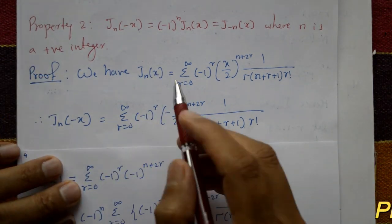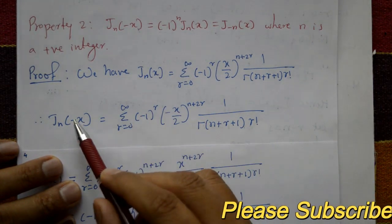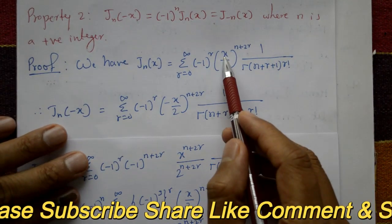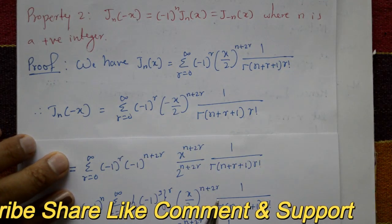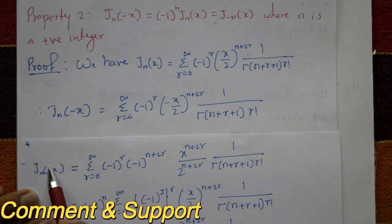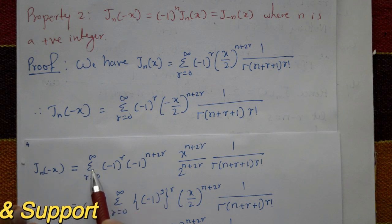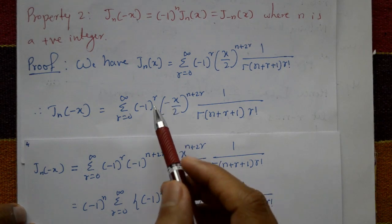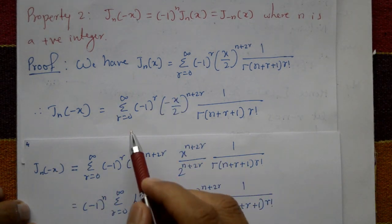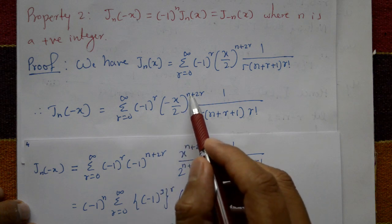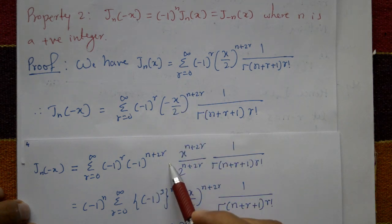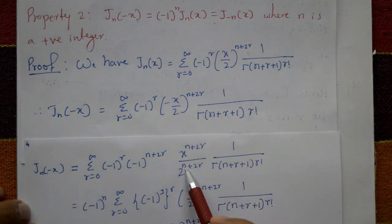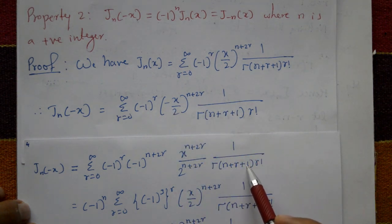Substituting x with minus x, so this becomes minus x and this is also minus x — rest are saved, no change. Now j_n of minus x is equal to summation r equals 0 to infinity of minus 1 raised to r. Taking this minus sign outside: minus 1 raised to n plus 2r, times x over 2 raised to n plus 2r, divided by 2 raised to n plus 2r, into 1 upon gamma of n plus r plus 1.